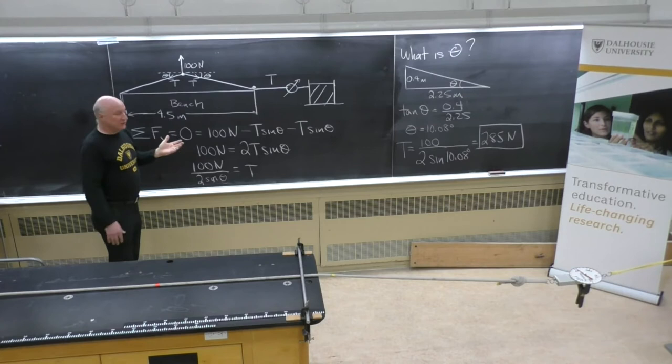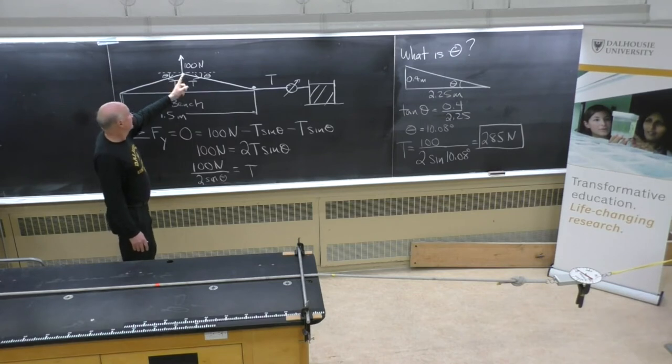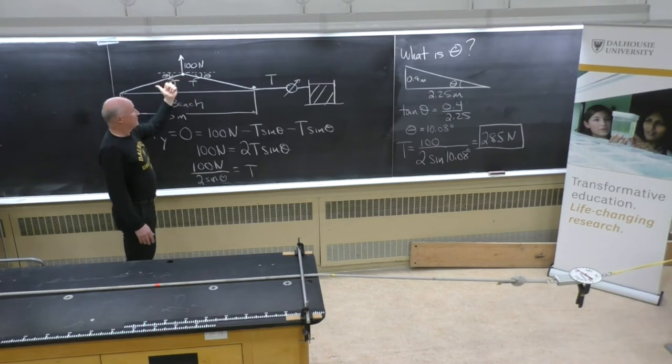Like Dr. DeVette showed in lecture, we can consider a free body diagram for this knot. This point where the spring scale is applied to the rope. And here there's three forces that act: my applied force up, and the tension in the rope in each direction.